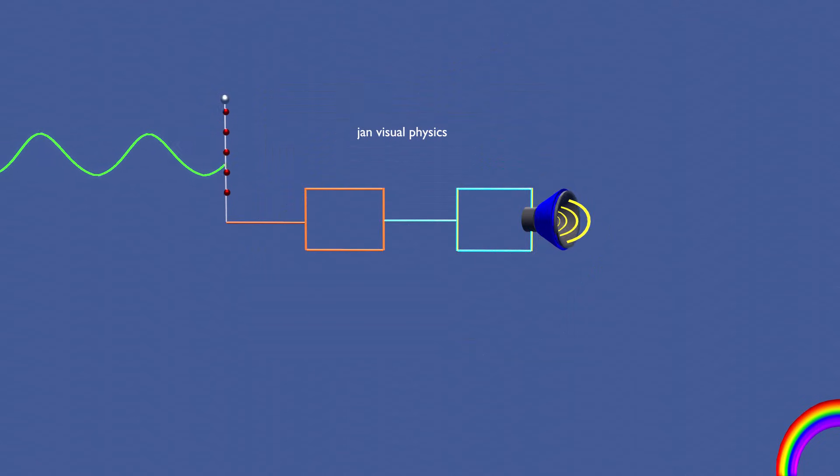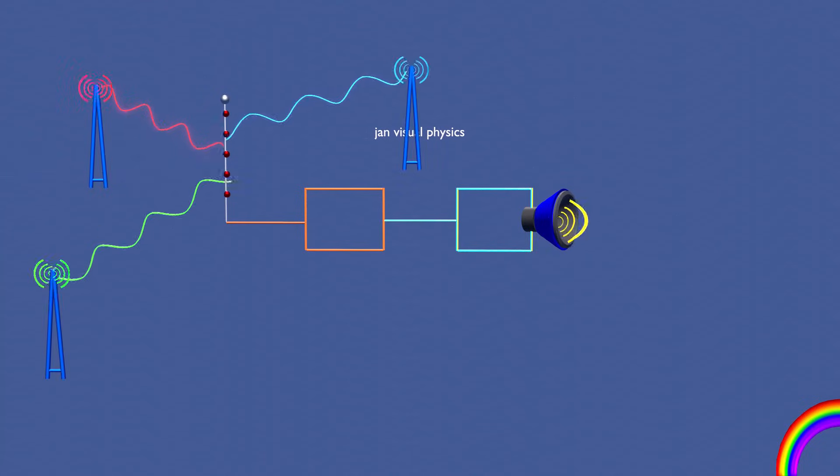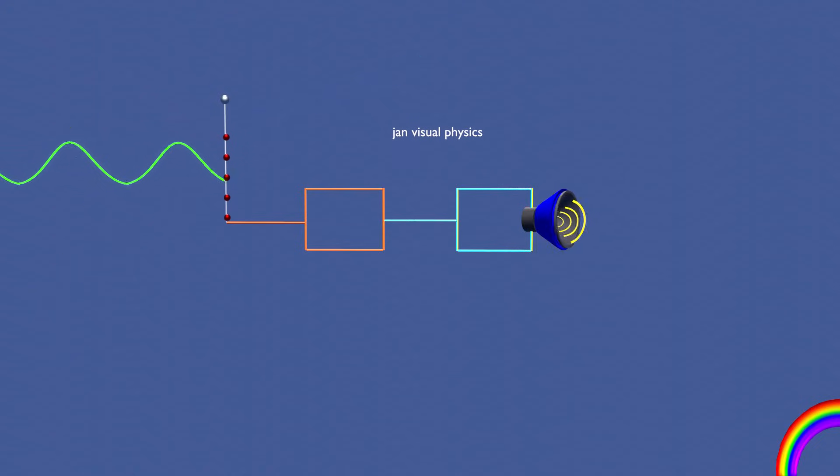When electromagnetic waves travel through space, they carry alternating electric and magnetic fields. When these waves from different stations strike a metallic antenna, the electric field exerts a force on the free electrons, pushing and pulling them back and forth.